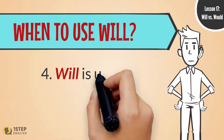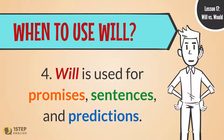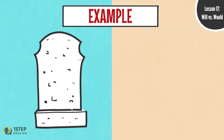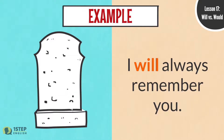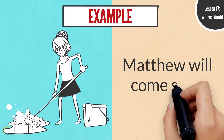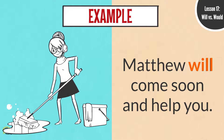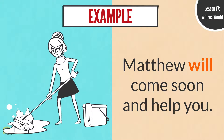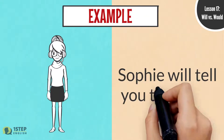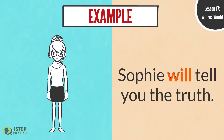When to use Will. Four: Will is used for promises, sentences, and predictions. For example: I will always remember you. Matthew will come soon and help you. Sophie will tell you the truth.